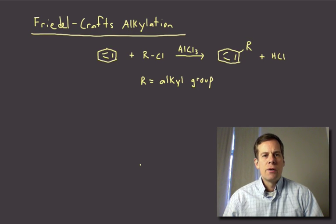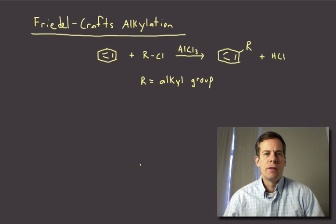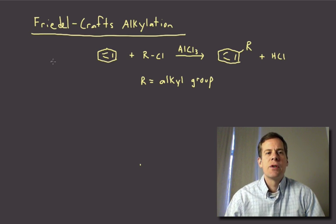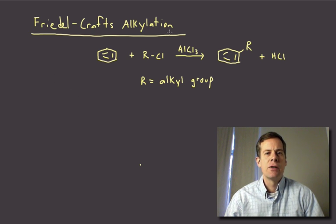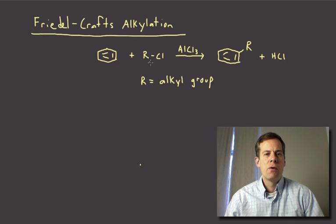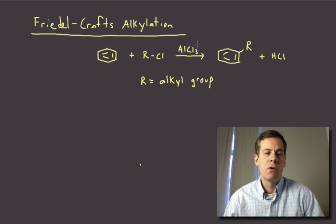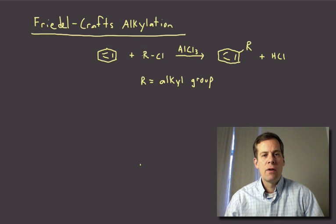The next reaction we're going to talk about is a way to incorporate alkyl groups onto the benzene ring. This is a process called the Friedel-Crafts alkylation. So what happens in this reaction is that we take our aromatic, treat it with an alkyl chloride or other alkyl halide, add a catalyst aluminum trichloride, and that will install that alkyl group onto the aromatic ring with HCl as the byproduct.